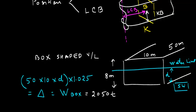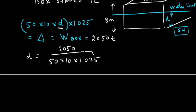So all we have to do, let's solve. Just simply solve this equation for D. The value of D will be 2050 divided by 50 into 10 into 1.025. This will give me, say, 4 meters here. The answer is 4 meters.